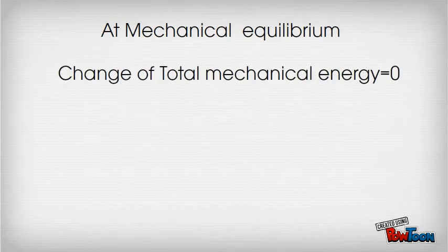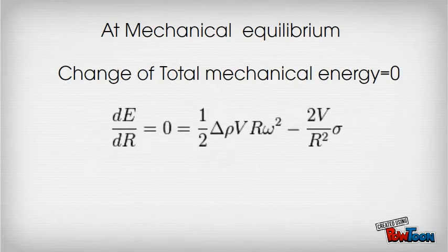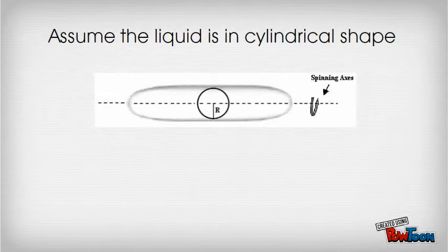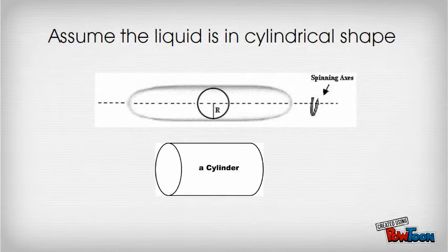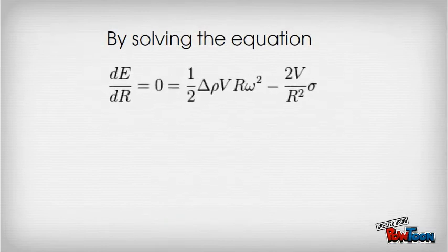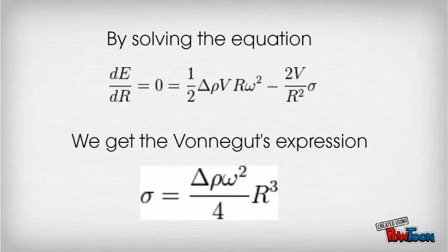At mechanical equilibrium, the change of the total mechanical energy is zero. So by differentiation, the previous equation changes to this equation. Assuming the liquid is in cylindrical shape, the volume can be assumed to be πlr². By solving the differentiation equation with substitution of the volume, we can get the Vonnegut expression.